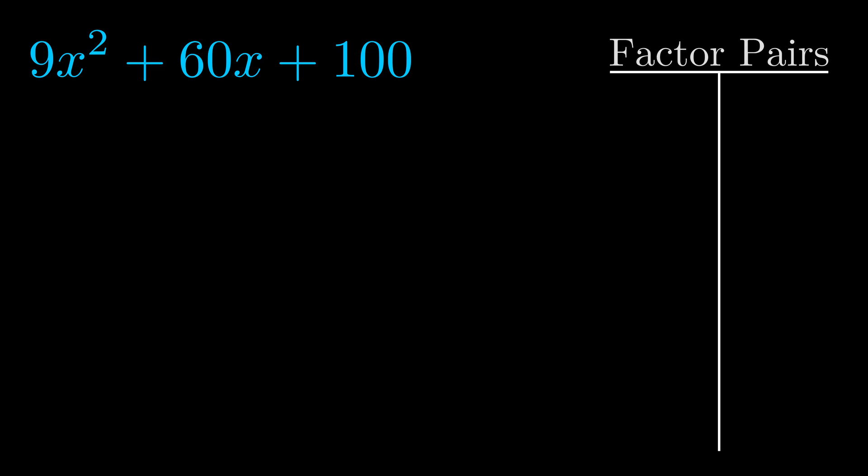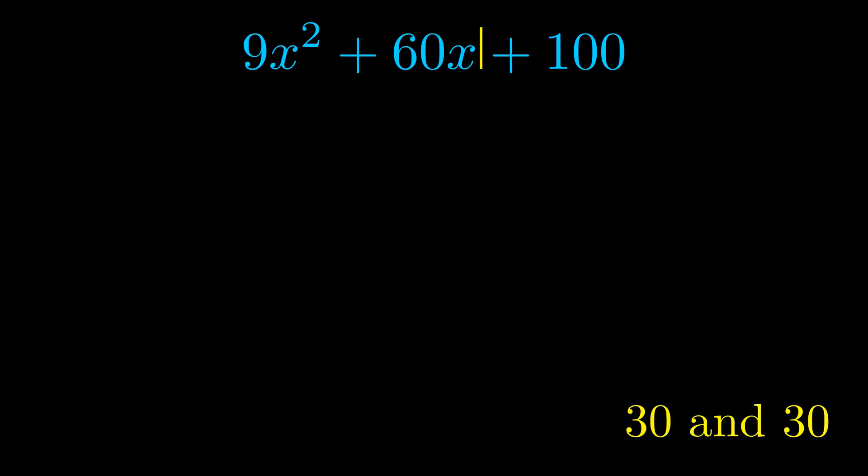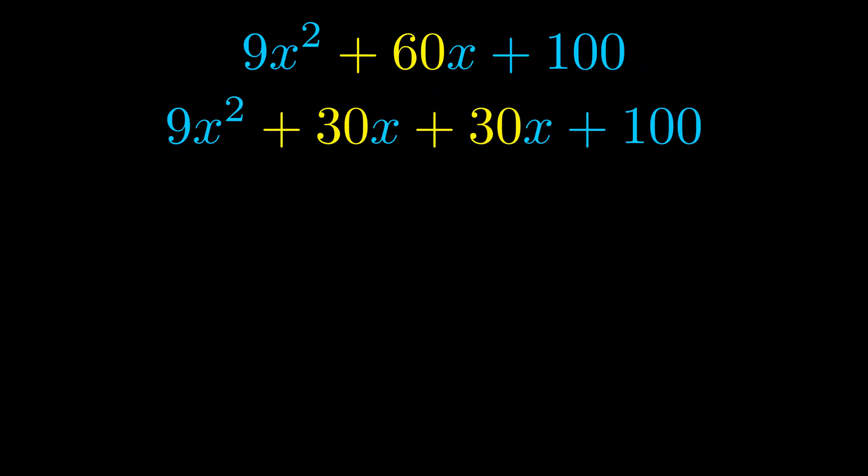Now once we have this factor pair what we want to do is use it to split up the b value. Notice how I'm going to keep my first term and my last term completely unchanged. It is only this b term highlighted in yellow that gets expanded into this correct factor pair.